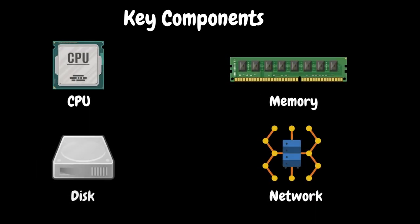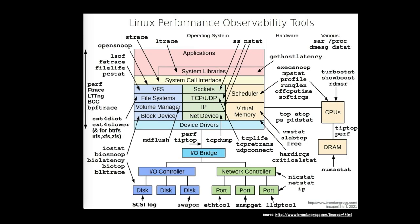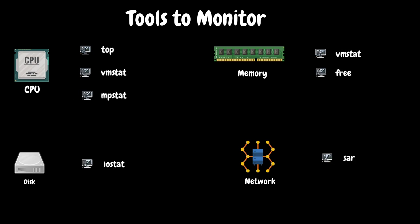There are four key components on the server that we should always monitor: CPU, memory, disk, and network. To monitor those components, we have many tools available, and based on the need or requirement, we will leverage the respective tools. Certain tools can monitor various aspects of server performance. For example, the SAR tool can be used to monitor CPU, memory, IO, and network performance. Depending on the situation, we will choose the appropriate tool.